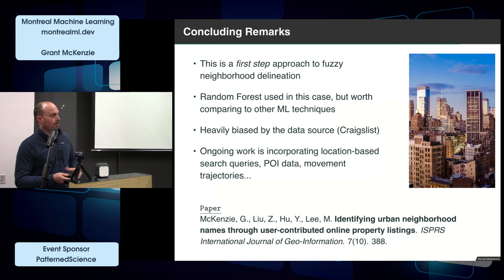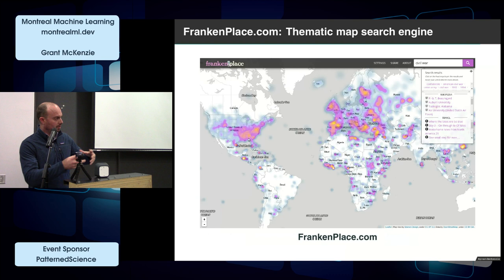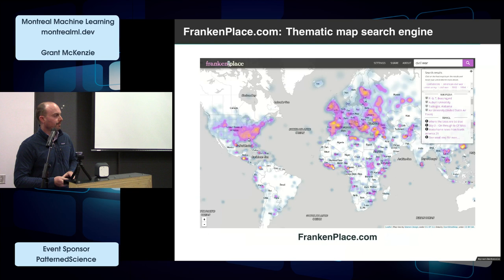The last thing I'll mention is a plug for an application we've built called FrankenPlace — a thematic search mapping platform that uses DBpedia data, the structured Wikipedia content, to map thematic patterns. Using natural language processing and topic modeling approaches, you can map out different themes and topics. A good example: if you search 'pizza' in Montreal, you get pizza places. But in FrankenPlace, it highlights parts of Italy where pizza originally started from and the trend in where pizza came from historically.